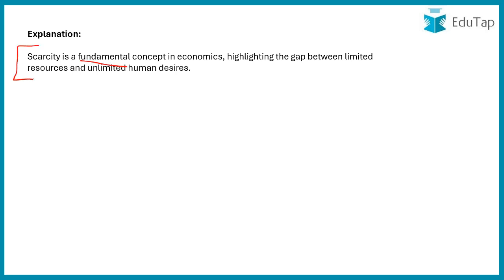Scarcity is a basic, fundamental term in economics — a major term that highlights the gap between limited resources and unlimited human desire. Resources can include time, money, and other things, but human desires are unlimited. Scarcity indicates this gap between the limited resources available to an individual or firm and their unlimited wants.